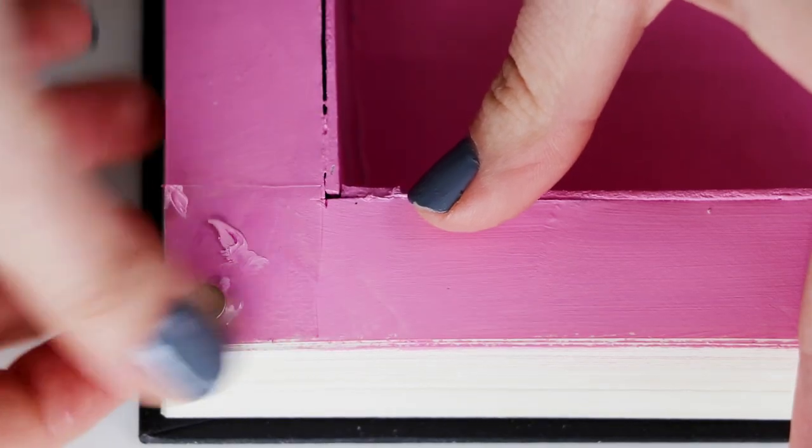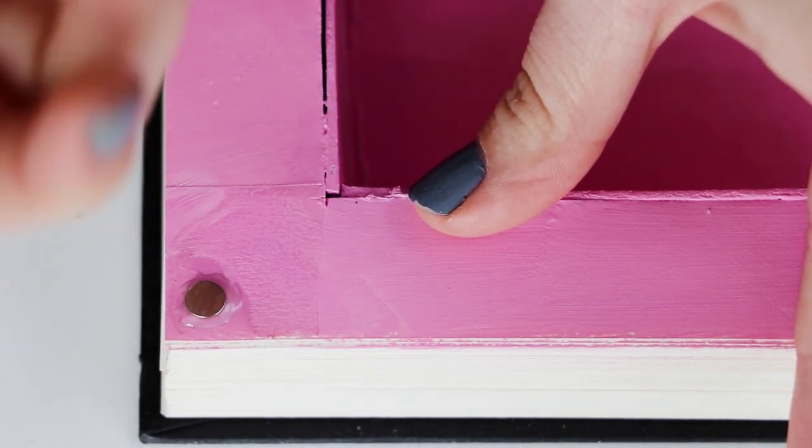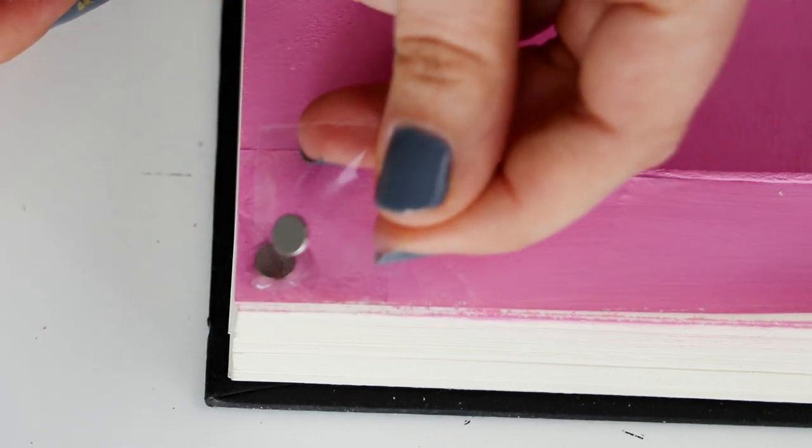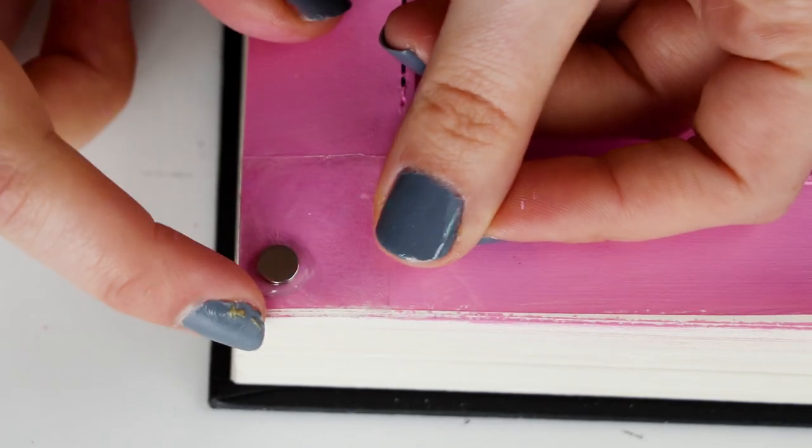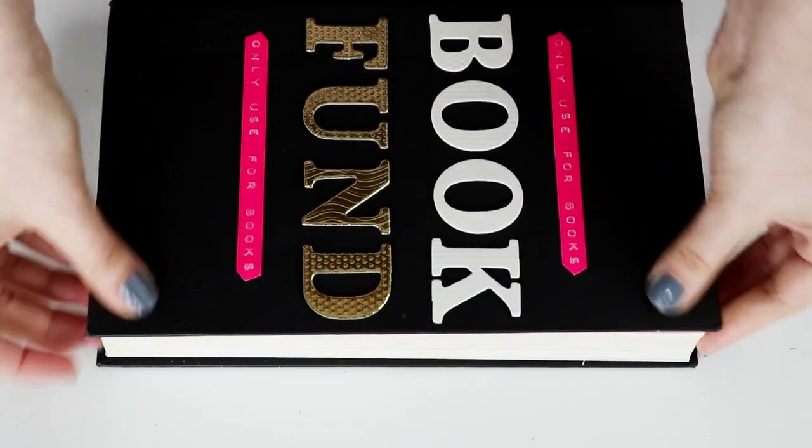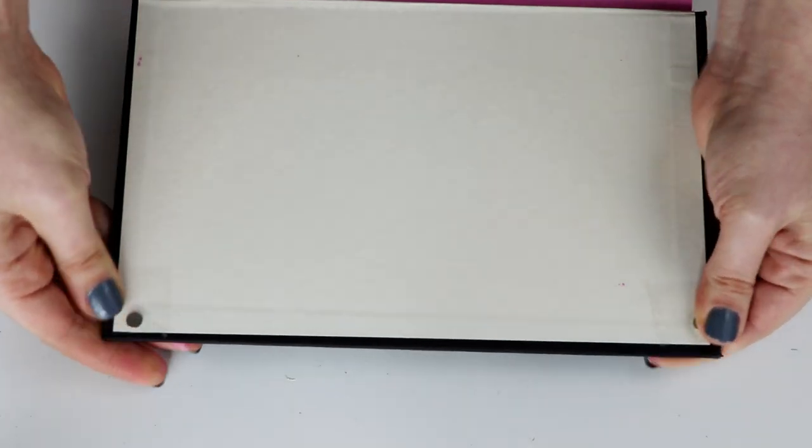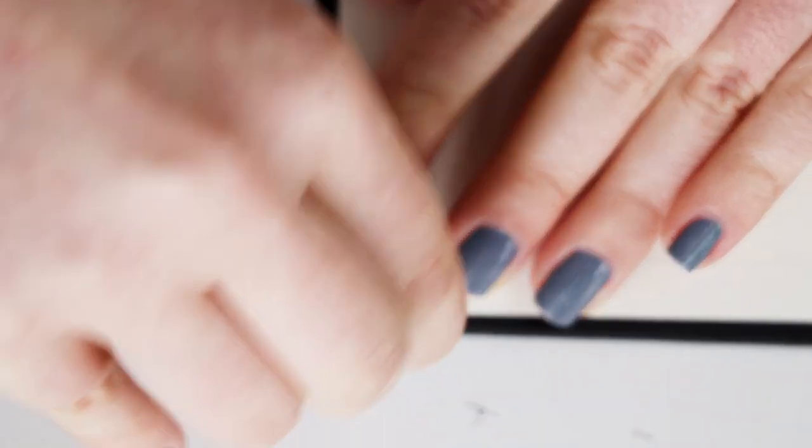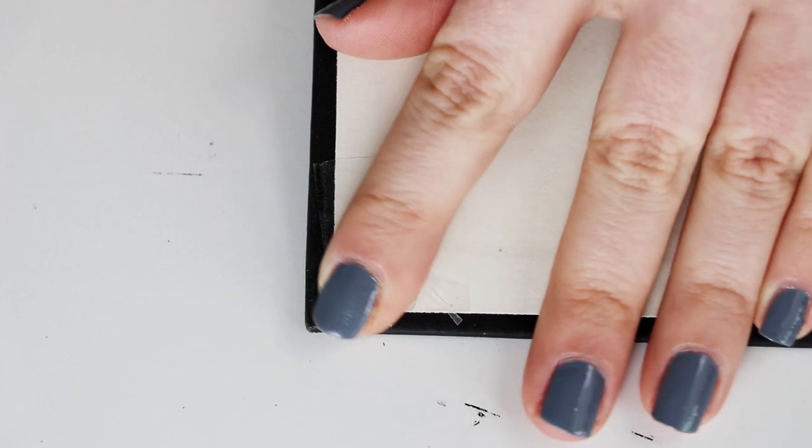Once the glue has dried, cover them with a bit of packing tape and then attach a second magnet to another piece of packing tape and stick it to the first magnet with the sticky side of the tape facing upwards. When you close the book and then open it again, the magnets will be on the inside of the book in the exact place they need to be.